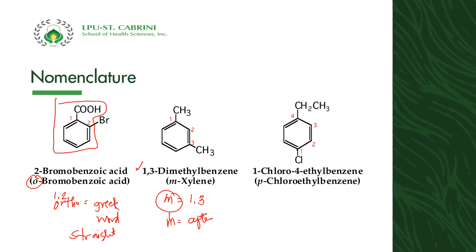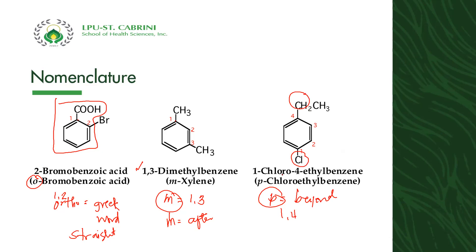We name it 1-chloro-4-ethylbenzene because we arrange substituents alphabetically and give them the lowest possible numbers. Since chloro comes before ethyl alphabetically, we start numbering from chloro to give 1-chloro-4-ethylbenzene, or simply para-chloroethylbenzene.